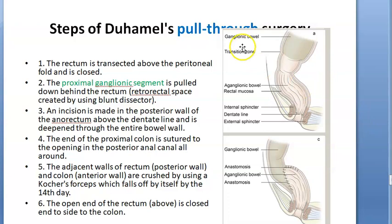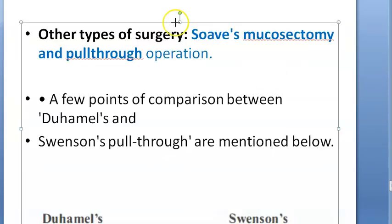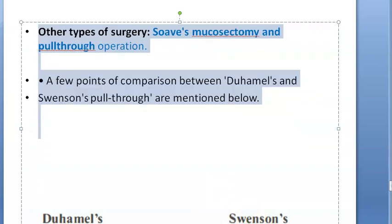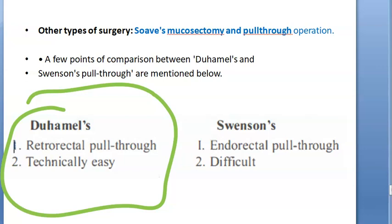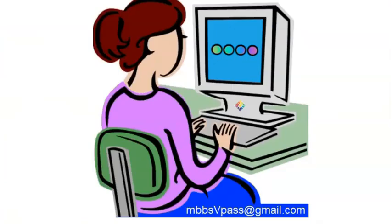In summary for the pull-through concept: the functioning upper segment is pulled down and attached to allow proper evacuation. The Duhamel procedure is technically described as a retro-rectal pull-through and is easier to perform. Swenson's procedure is an endorectal pull-through and is more technically difficult.